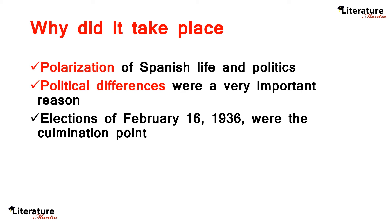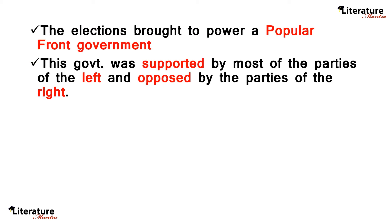Why did it take place? The primary reason was the polarization of Spanish life and politics. Political differences were a very important reason. The elections of February 16, 1936 were the culmination point. The elections brought to power a popular front government, which was supported by most of the parties of the left but opposed by the parties of the right.